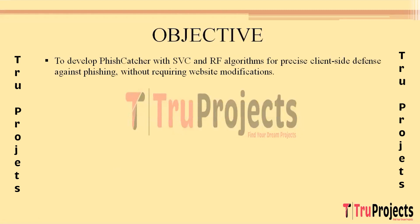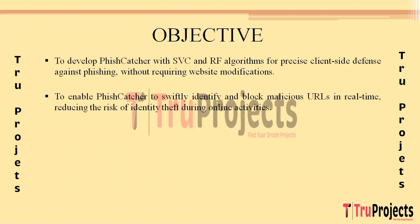Fish Catcher aims to develop a client-side defense mechanism against phishing, utilizing advanced Support Vector Classifier and Random Forest algorithms for precise identification and blocking of malicious URLs. The goal is to ensure robust protection without altering targeted websites. Fish Catcher's primary objective is real-time operation, swiftly identifying and blocking malicious URLs to proactively mitigate identity theft risk during online activities.